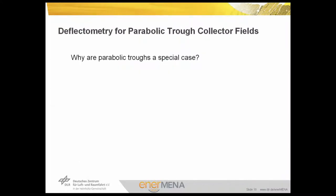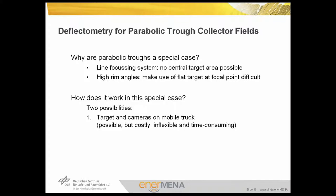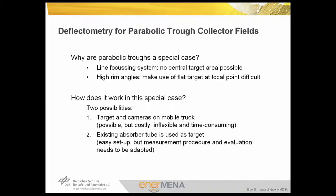What is different if we want to apply deflectometry not only to a single panel of a parabolic trough but to an entire collector or collector field? For a line-focusing system there is no central target possible like in the case of a parabolic dish or heliostat, and due to its high rim angle it's not possible to use a flat target close to the focal point. One could use a target and camera on a mobile truck, but this is costly, inflexible, and time-consuming. So the preferred solution is to use the existing absorber tube as a target and as a pattern, giving an easy setup, though the measurement procedure and evaluation are different.